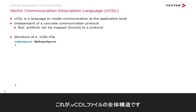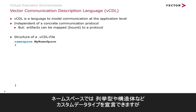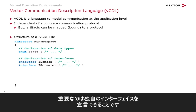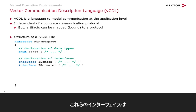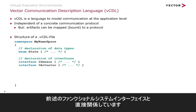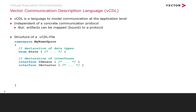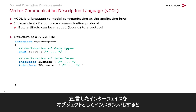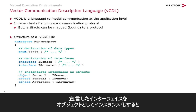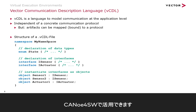Here we see the general structure or outline of a VCDL file. Everything is grouped into a namespace. In a namespace, you can declare custom data types such as enumerations or structures. Most importantly, you can declare your interfaces — these interfaces directly relate to the functional system interface I talked about earlier. And once you've declared the interfaces, you can instantiate them as objects, which brings them to life in Canoo for Software. This is what you actually interact with in Canoo for Software.